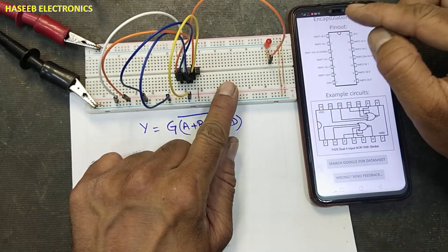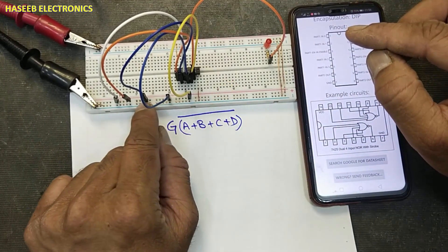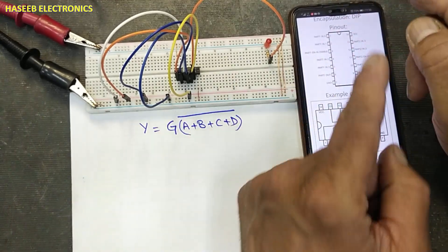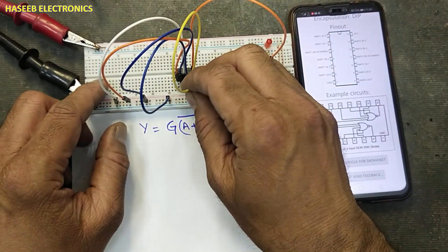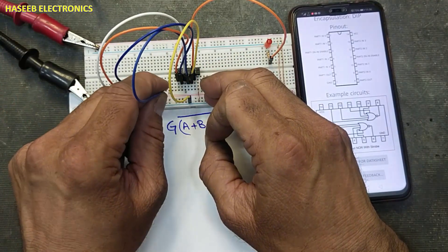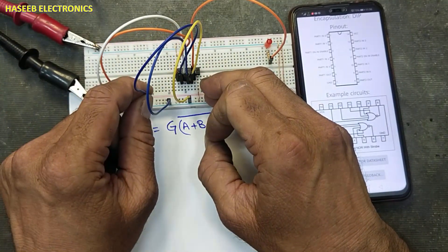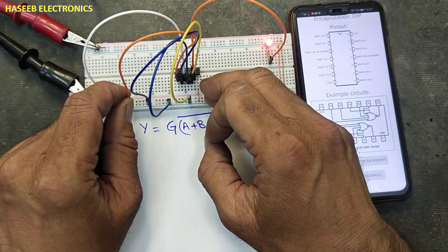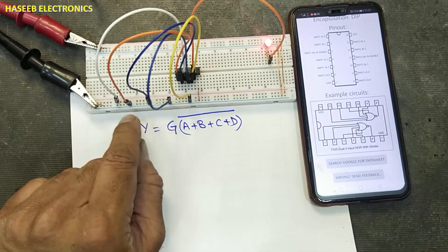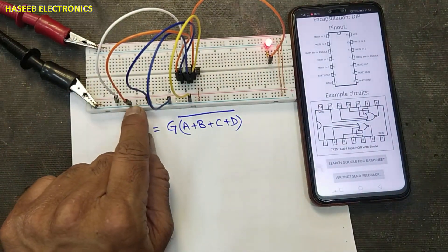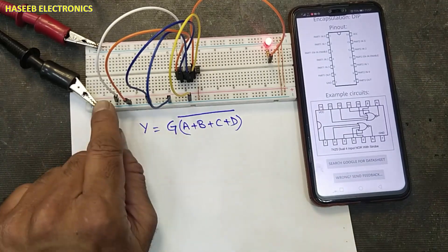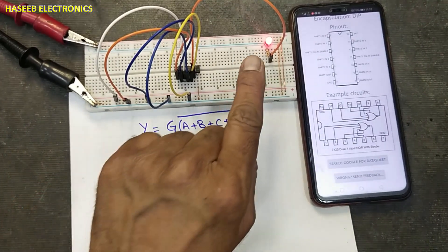Anyone high, output will low. When all inputs will low, the output will high. Low. Second input low, third input low, fourth input low. When all inputs are low and G is high, the output is high.